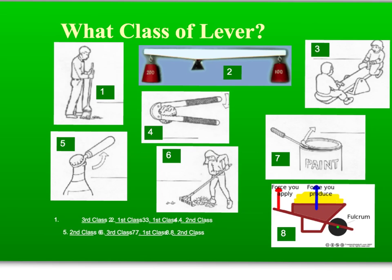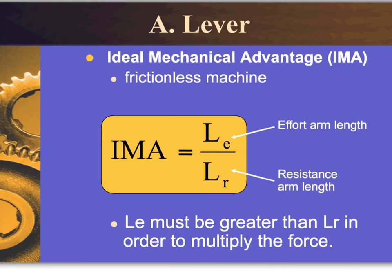By identifying the fulcrum, where the effort is applied, and the resistance, you should be able to identify each class of lever. Here's an opportunity to spot check your understanding of the three classes, with answers provided at the bottom. Now that we've identified the three classes of levers, how do we calculate the ideal mechanical advantage for the machine?